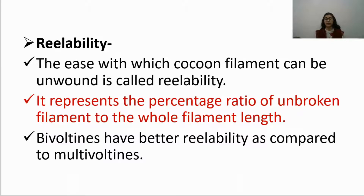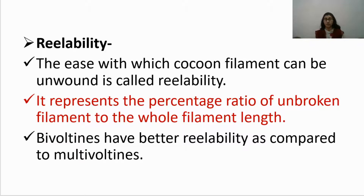Reliability refers to the ease with which the cocoon filament can be unwound. It represents the percentage ratio of unbroken filament to the whole filament length. Bivoltines have better reliability compared to multivoltines, which is why bivoltines are used on multi-end reeling machines. Indian multivoltines cannot be reeled on multi-end machines and are usually processed on charkha or cottage basin reeling.